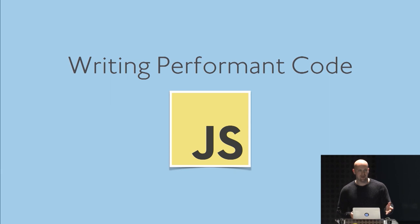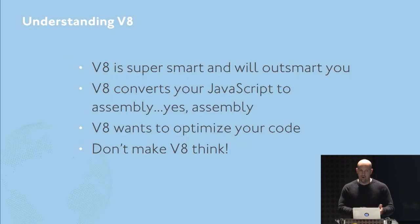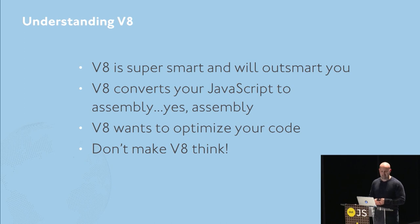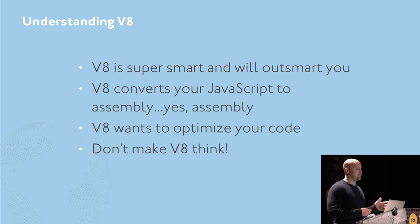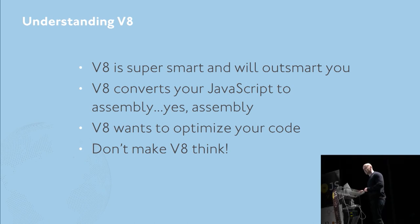Before we get there, let's talk about writing performant code. In order to write performant code, it's probably good to understand a little bit about V8 and how it works. V8 is that engine that powers Node.js — it's super smart and maintained by some of the smartest engineers on the planet, and it will outsmart you. So getting clever with it is not a really good idea. V8 is super fast because it actually takes your JavaScript and converts it to assembly. V8 actually wants to optimize your code because V8 wants to be fast — it wants your code to be efficient and optimal. So the moral of the story is: don't make V8 think. If you're forcing V8 to think hard about how to optimize your code, even though it's really smart, it's not going to optimize it.